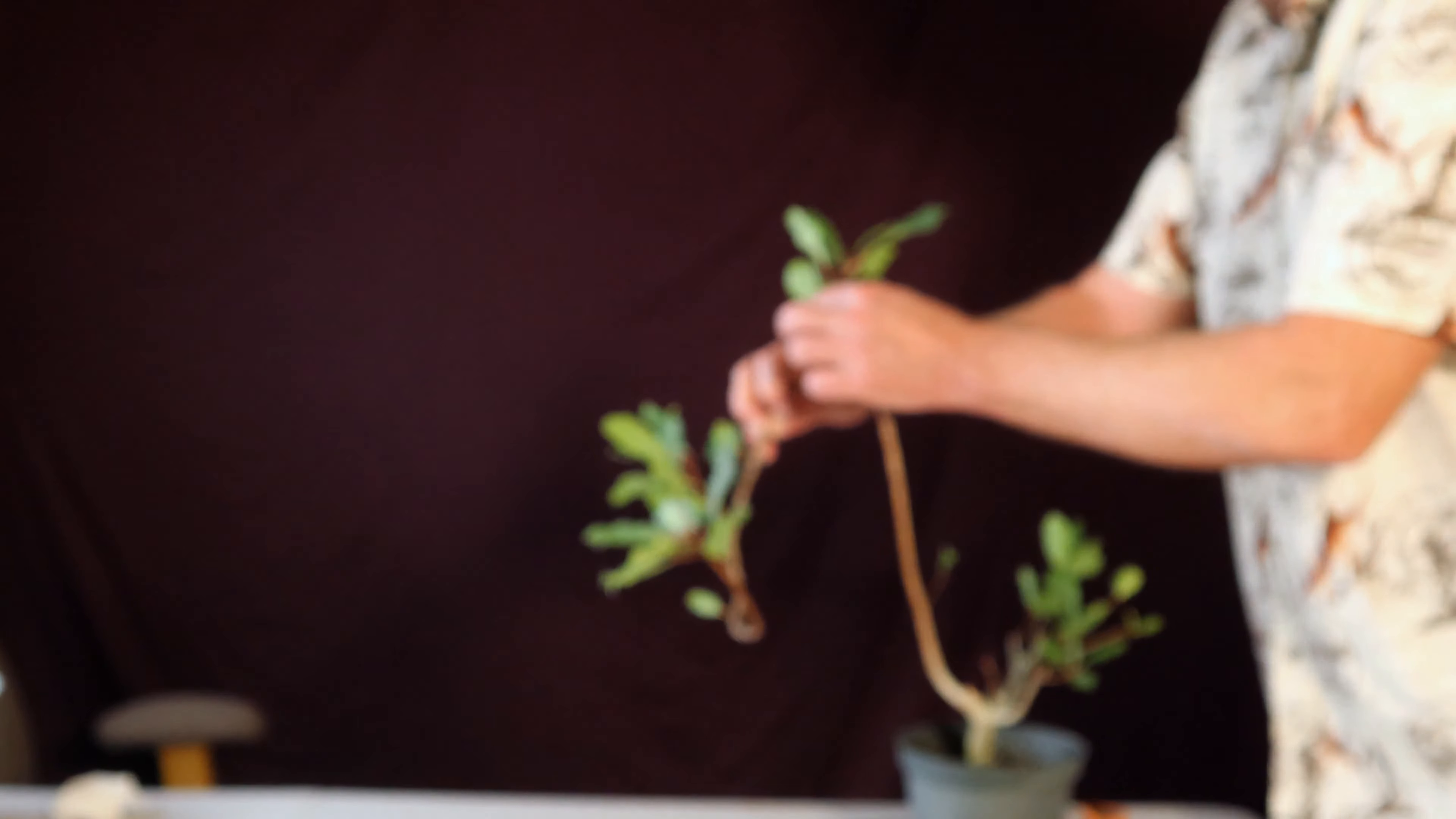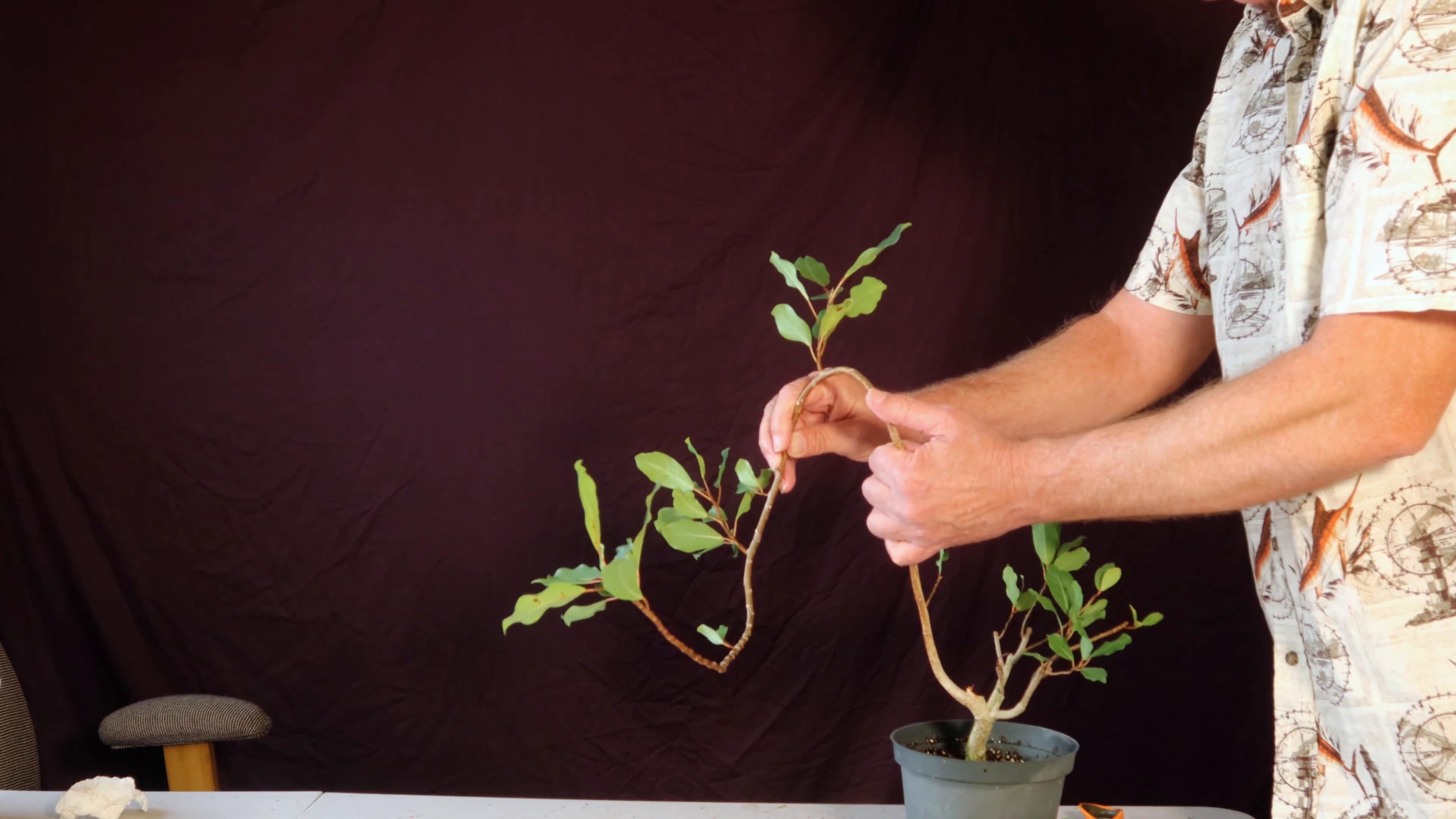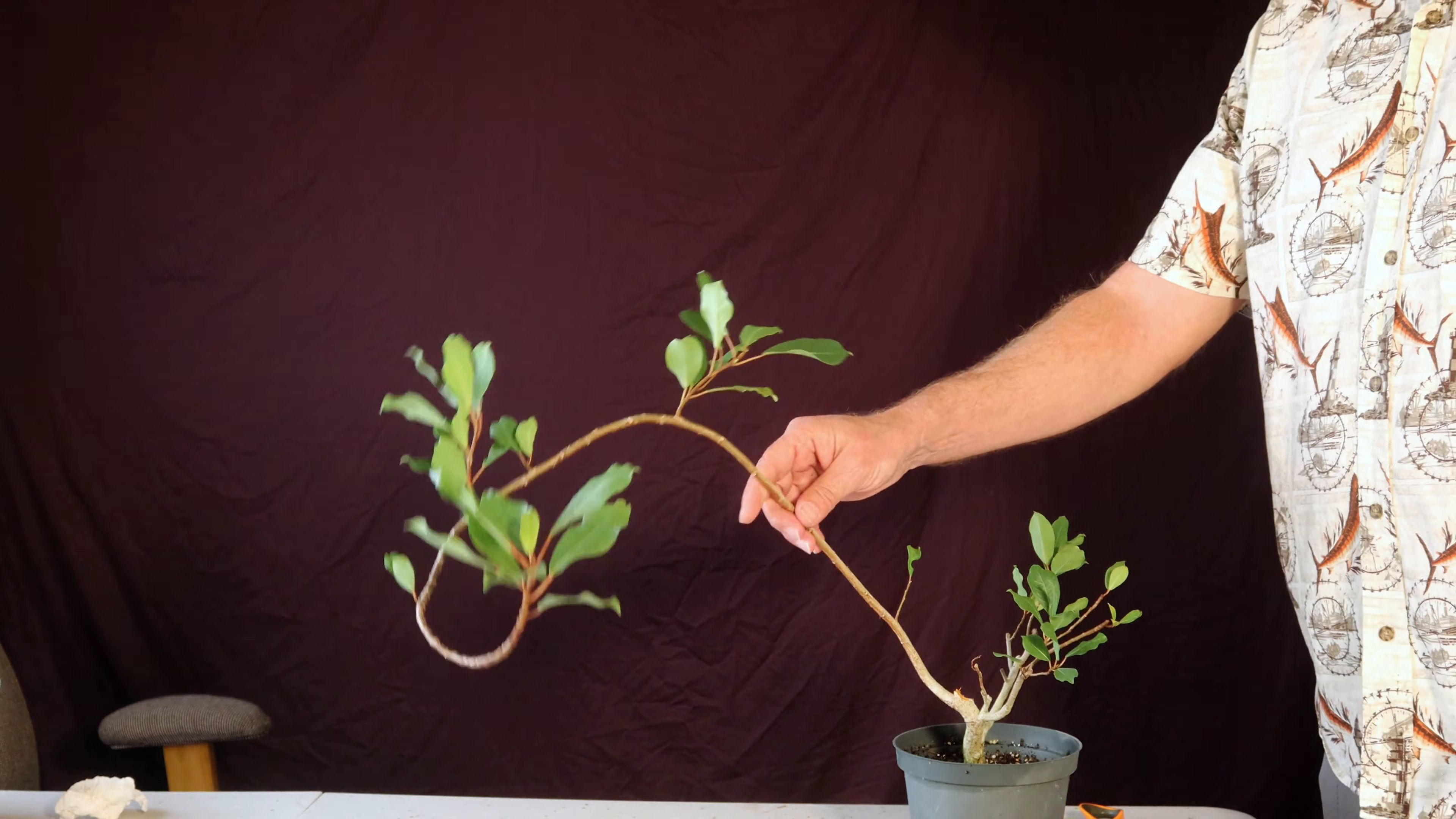I'm going to leave as much green on here as I can for now, just in case any of this that I do is harmful to the tree or whatever. And it's got all this green to recover. And then once I notice it recovering and maybe even back budding a little bit down here, I'll go ahead and cut all these tips off with the wire on there. And just see where it goes from there and make my decisions from there. I've never really tried to do anything like this before with the ficus.